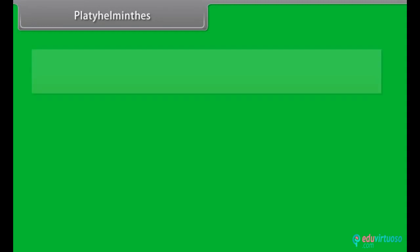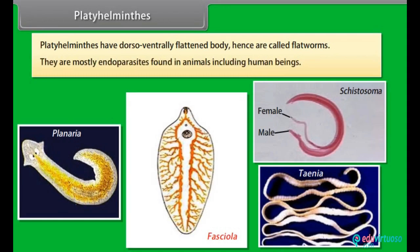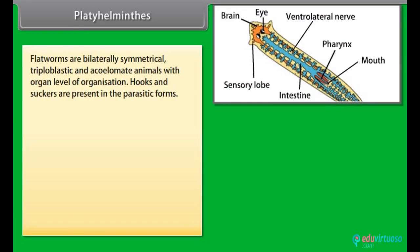Platyhelminthes have dorsoventrally flattened body, hence are called flatworms. Platyhelminthes are mostly endoparasites found in animals including human beings. Flatworms are bilaterally symmetrical, triploblastic and acoelomate animals with organ level of organization. Hooks and suckers are present in the parasitic forms.